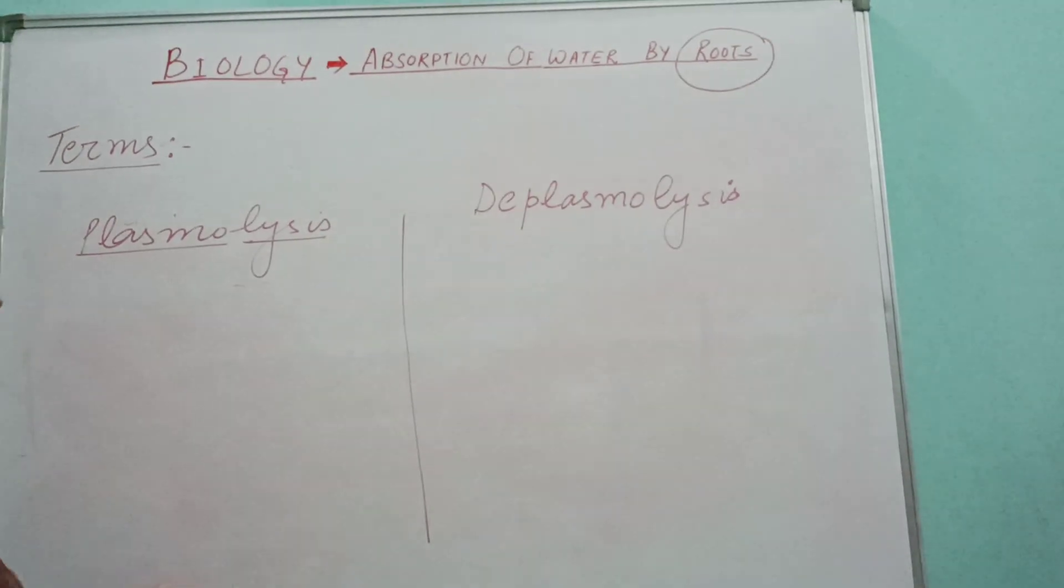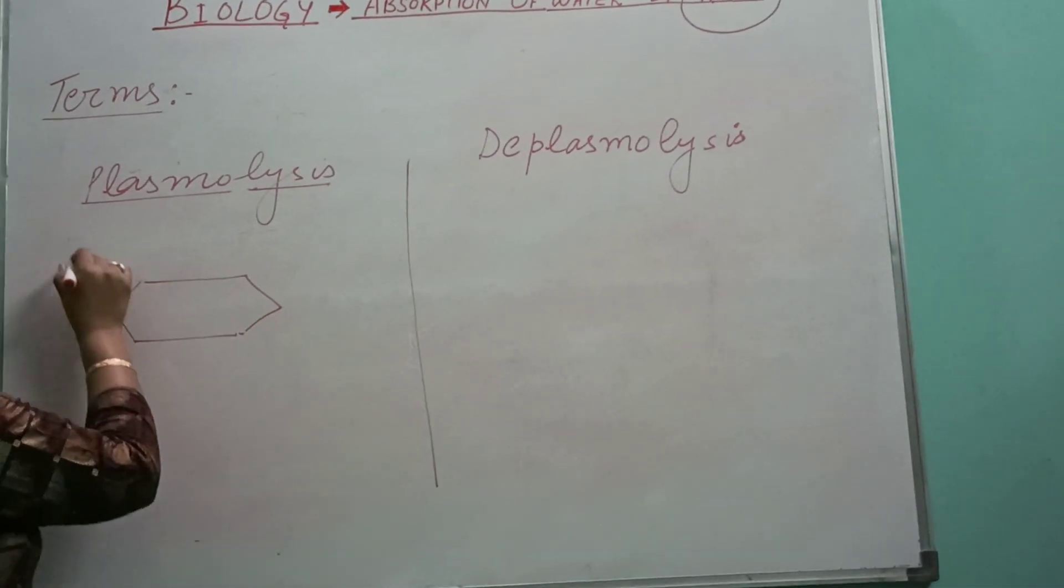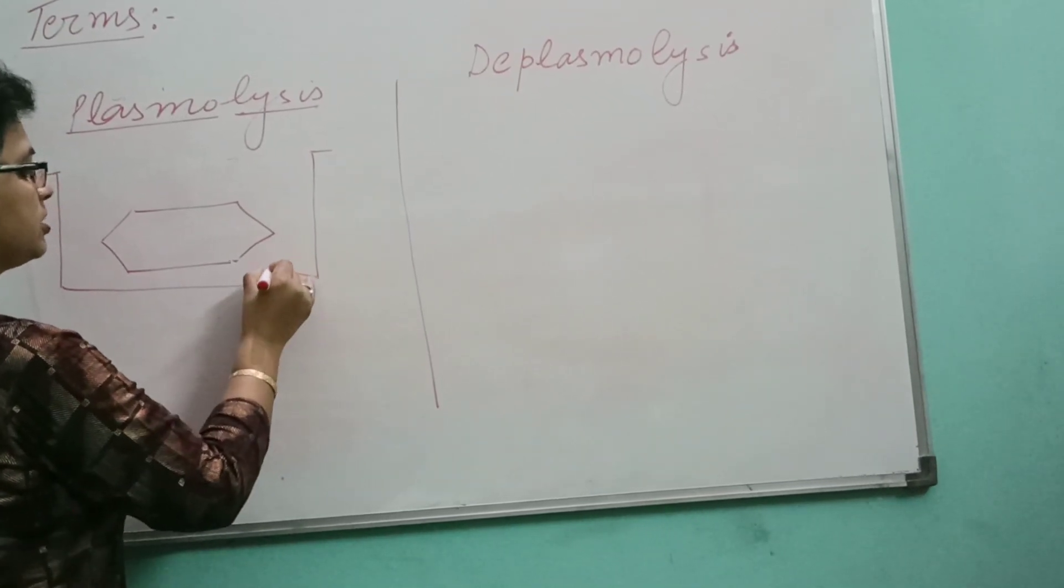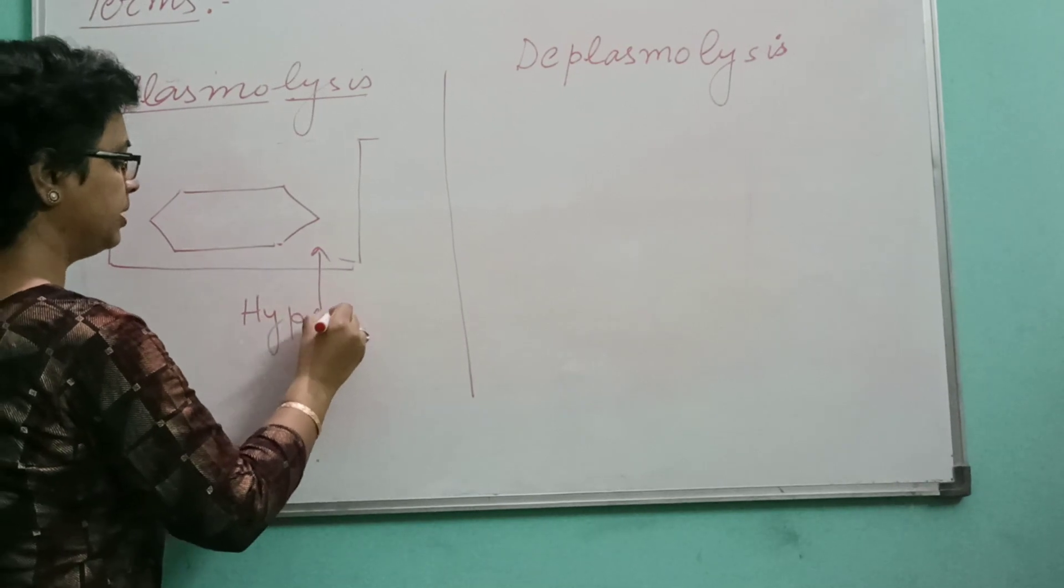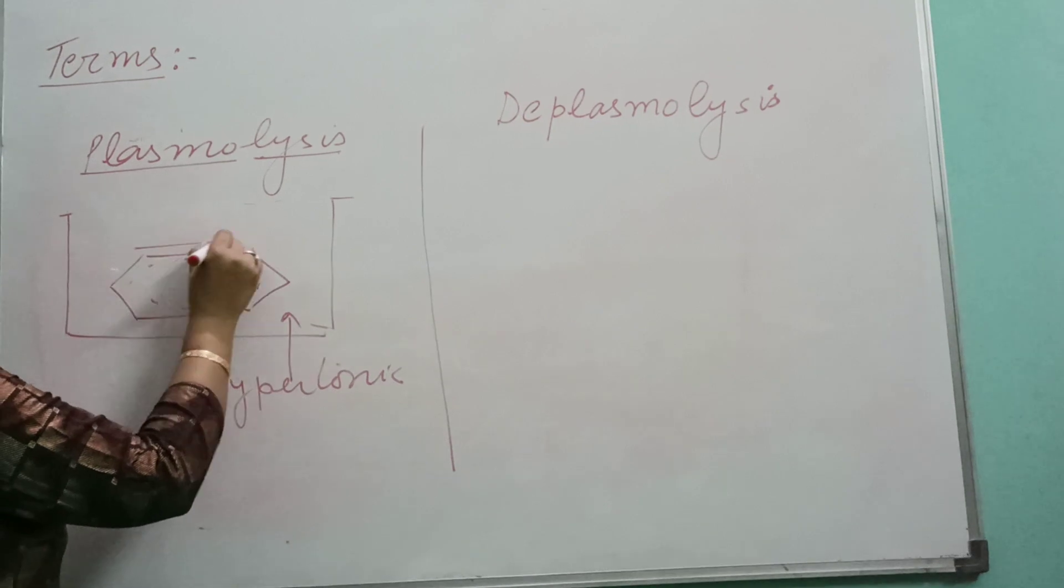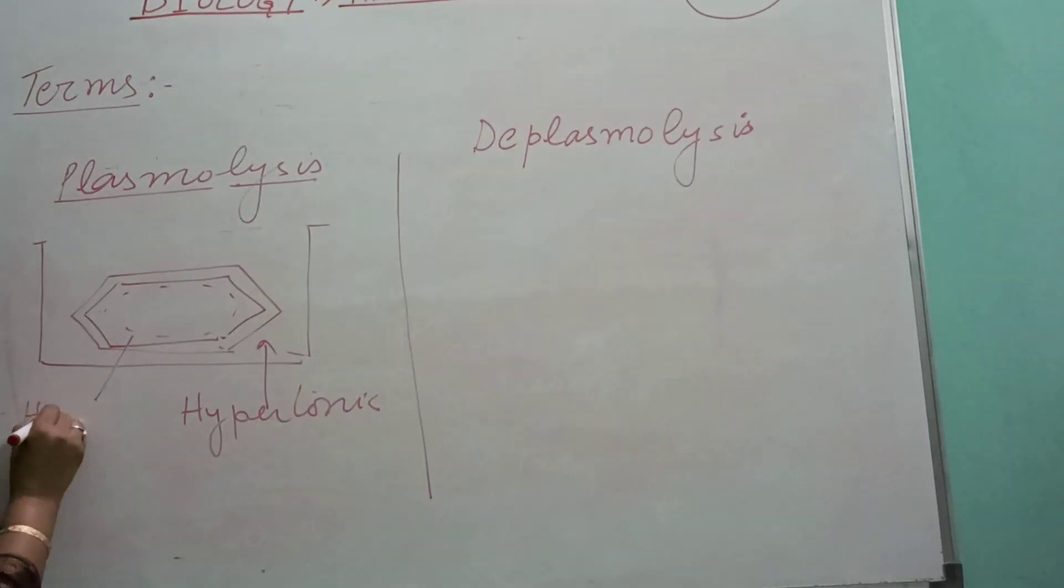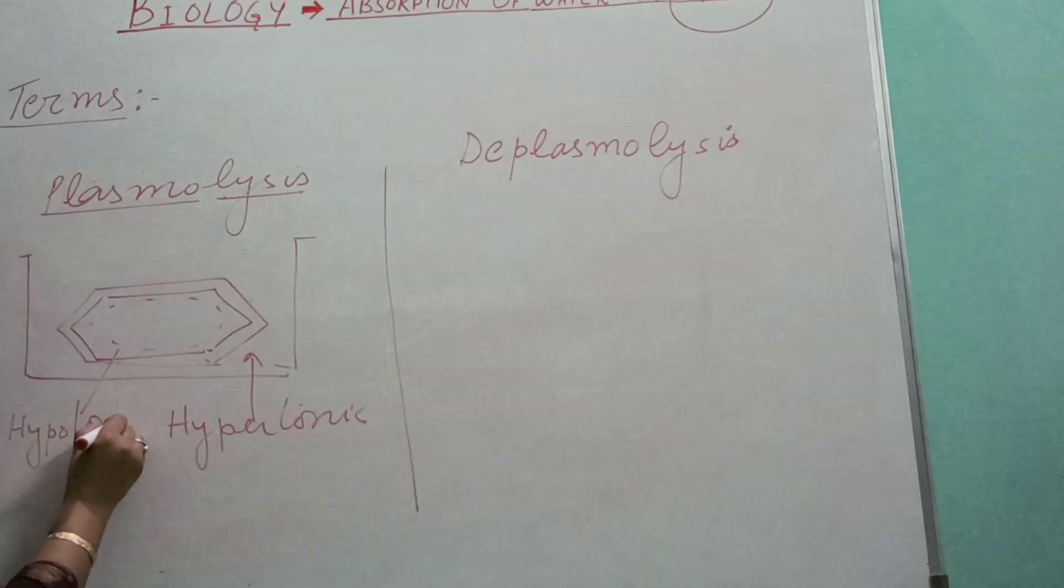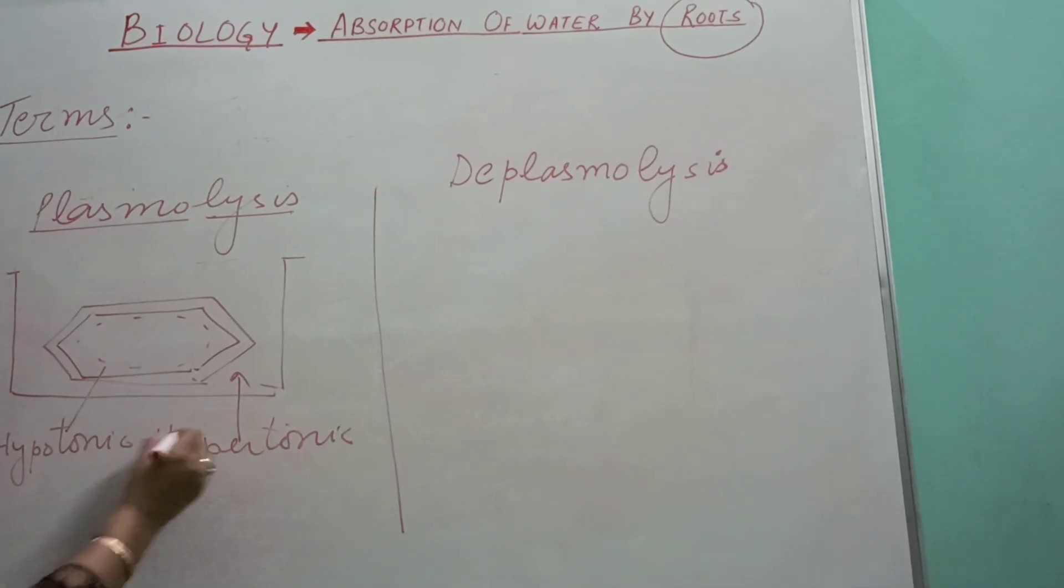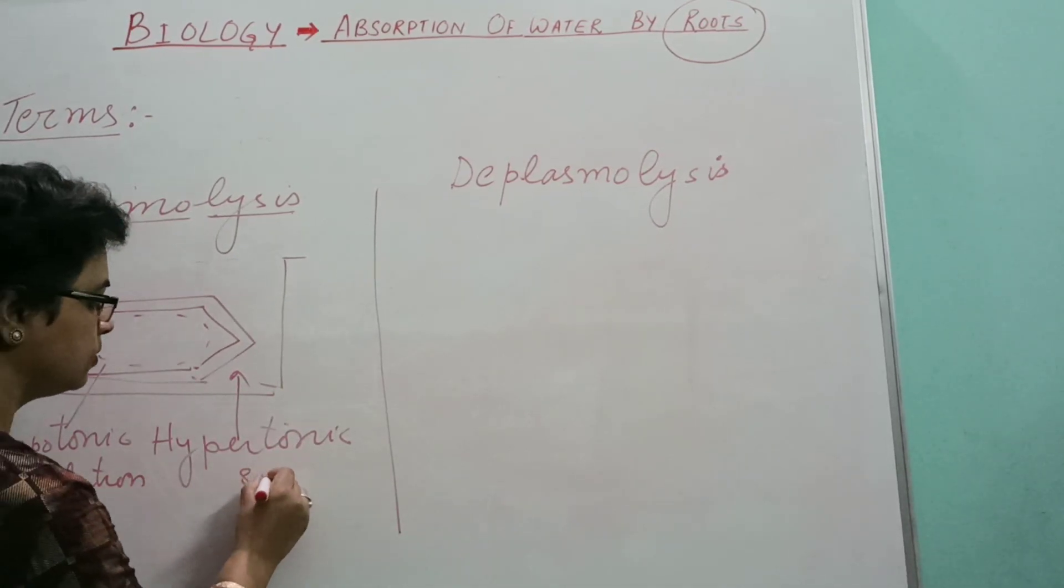Now, when a cell is placed in a hypertonic solution, the solution which is outside is hypertonic and the solution inside the cell is hypotonic. As we know, the movement of water always occurs from hypotonic solution to hypertonic solution. In this condition, the movement of water will occur from A to B.